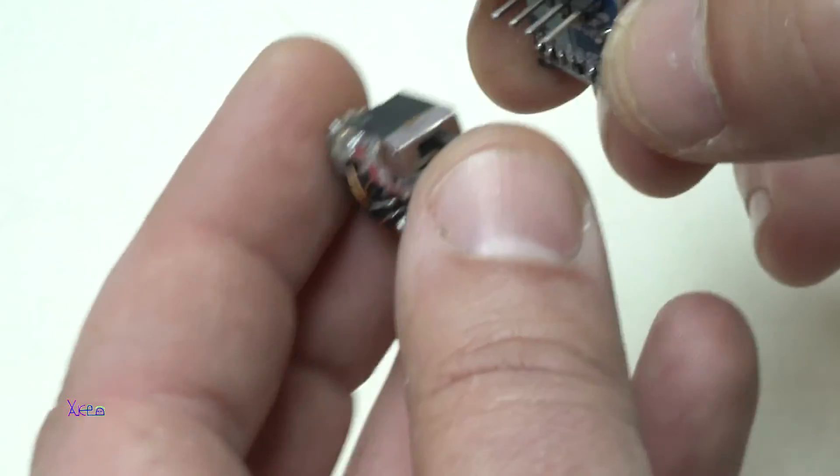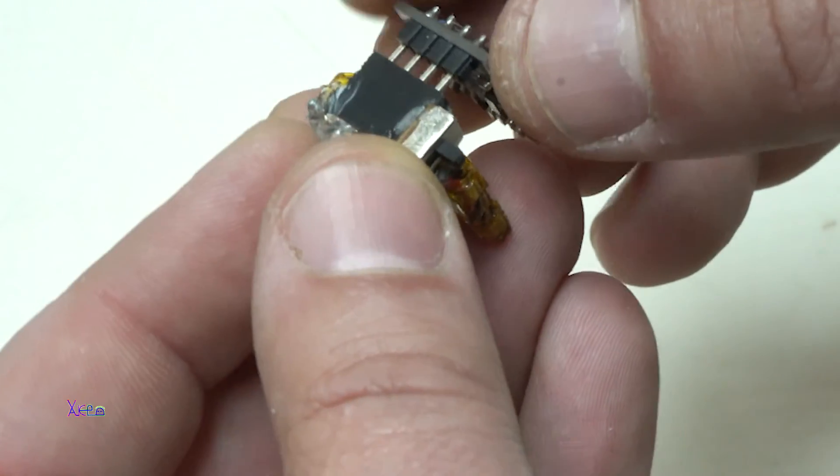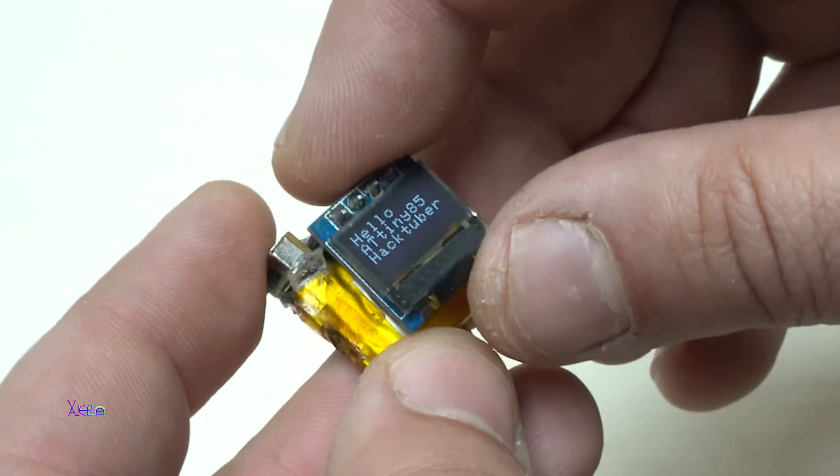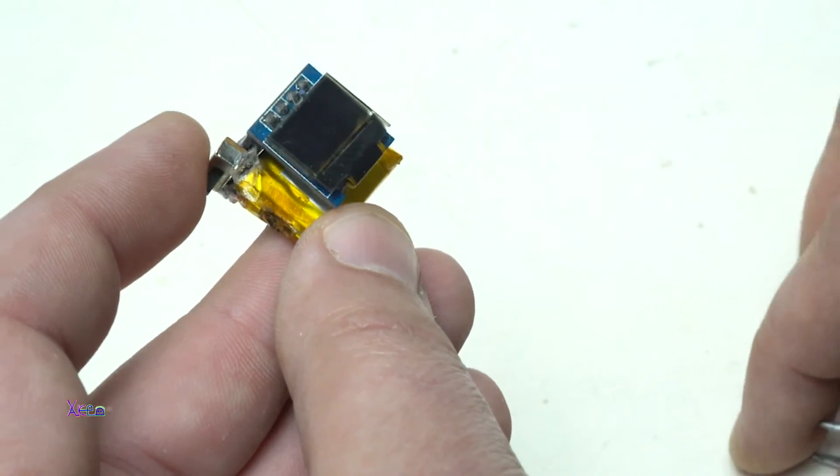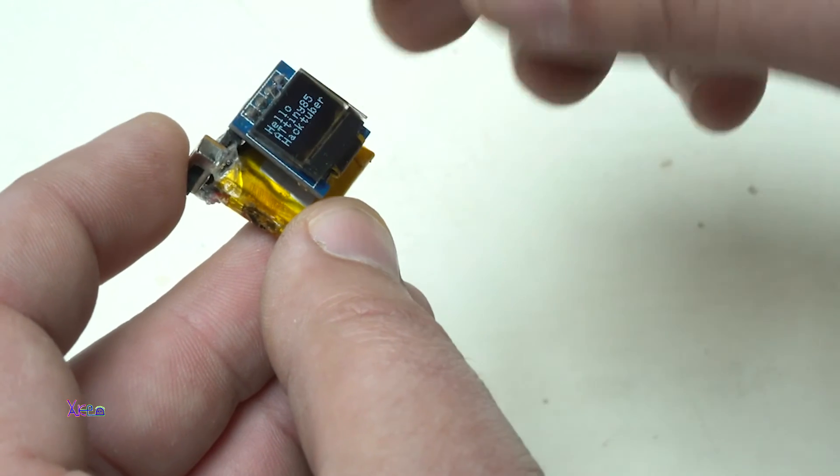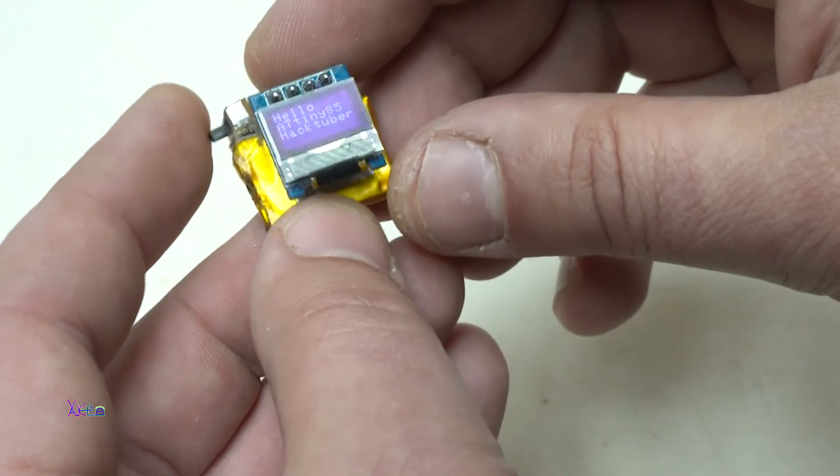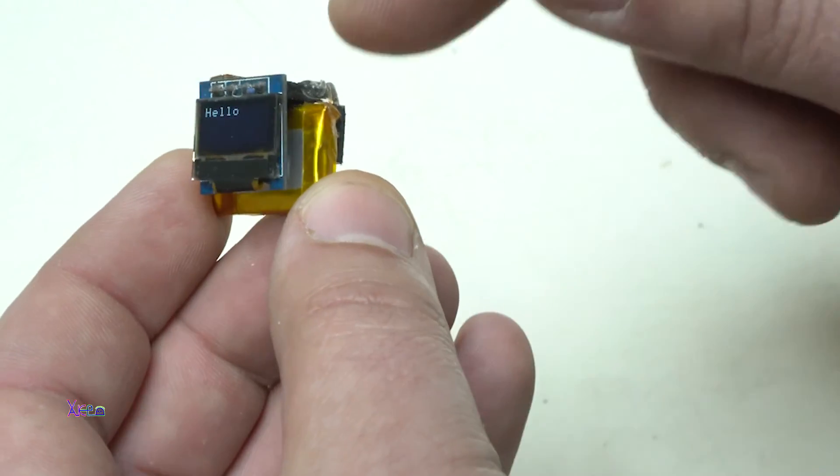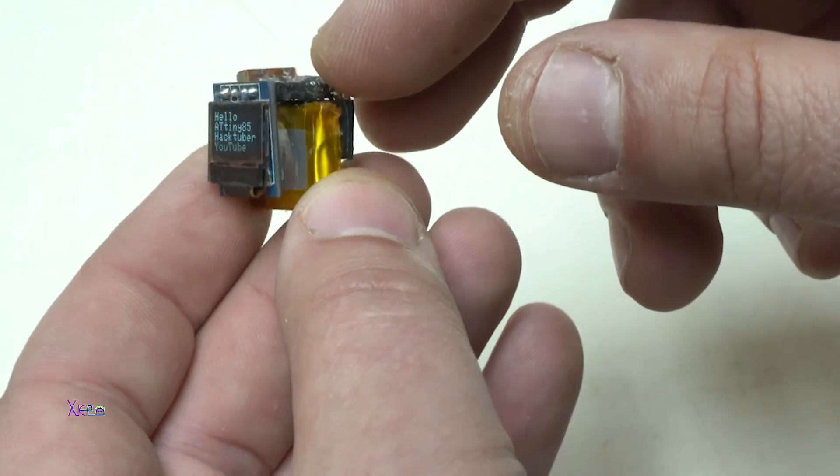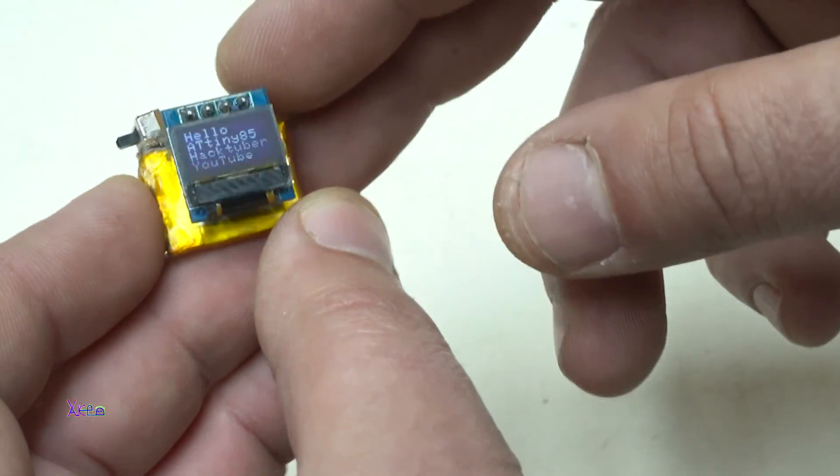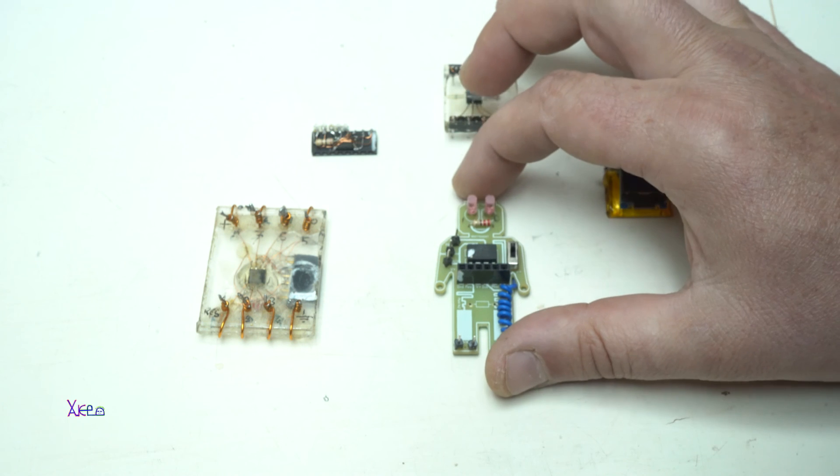This one is, as I said, my latest DIY project. And it's a hello world project with small OLED screen, 64 by 32 pixels. I also have a full video how to make this and how to experiment. Just check the links below this video.